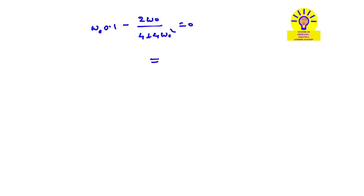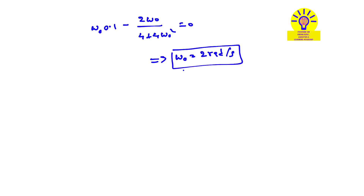Simplifying this equation, we get ω₀ = 2 radians per second. This is the resonant frequency for the given circuit. That is the complete process for finding the resonant frequency. Thanks for watching — please subscribe to the channel and don't forget to like the video.